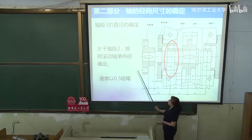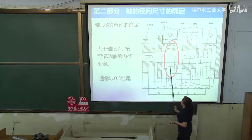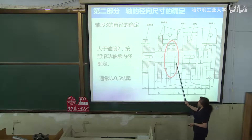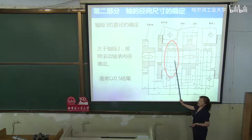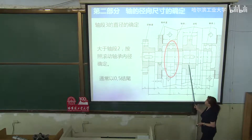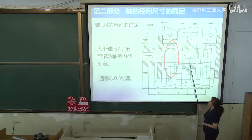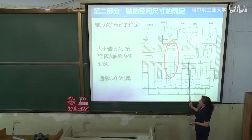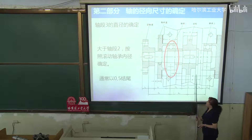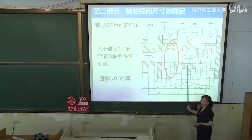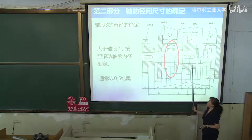轴段三是安装轴承处。轴承类型选择与轴上受径向力、轴向力的大小有关。在一般参数范围内，轴承内径通常以0和5结尾。因此第三段轴径只要大于第二段轴径，并且以0或5结尾就可以了。第四段是安装齿轮的，要与齿轮配合，所以它一定要比第三段大一到两个毫米。